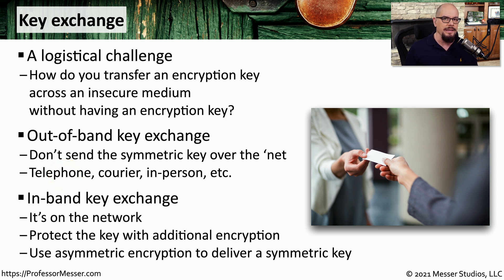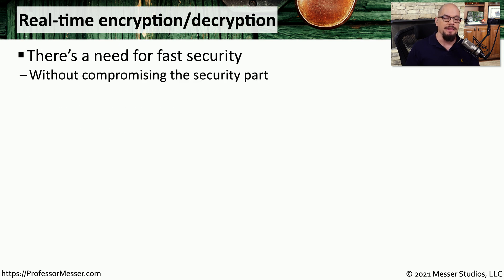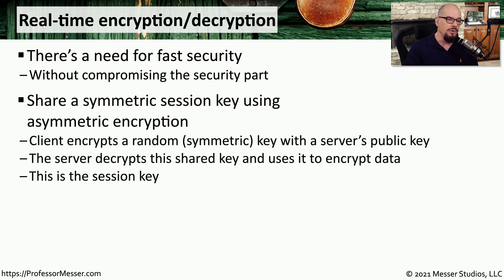It's much more convenient if you're able to transfer a key directly across the network and have it appear instantly on the other side. We often do this by protecting the key using an additional encryption method. For example, it's very common to use asymmetric encryption to send a symmetric key to someone else. Here's one way to provide this fast ability to exchange keys without sending the key in the clear across the network: you can use asymmetric encryption to encrypt the symmetric key inside of it.